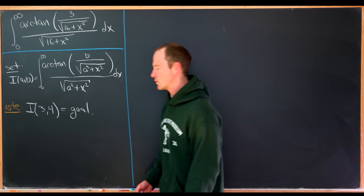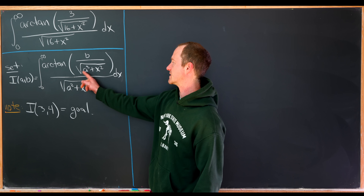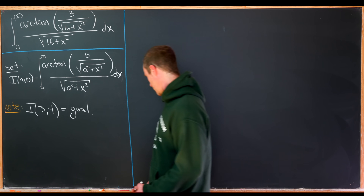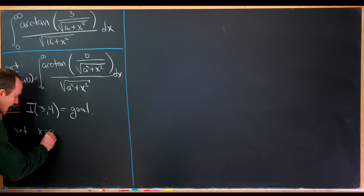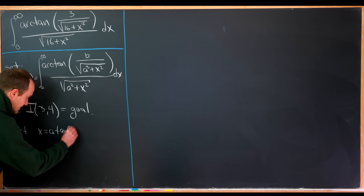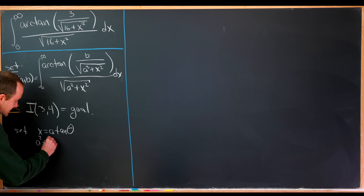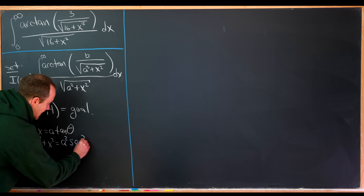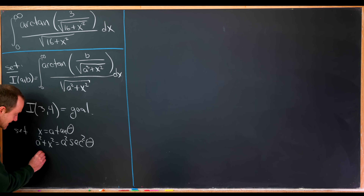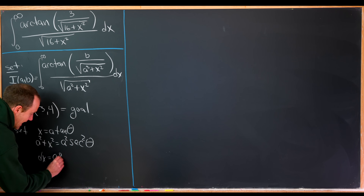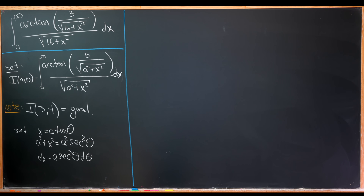Let's start with a substitution motivated by the fact that we have this square root of a squared plus x squared. The substitution is x equals a times tangent of theta. That means a squared plus x squared equals a squared times secant squared of theta by the Pythagorean trig identity, and dx equals a times secant squared theta d theta by taking the derivative of tangent.